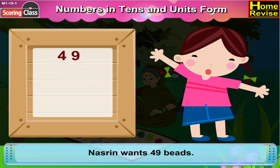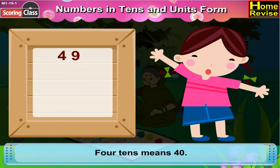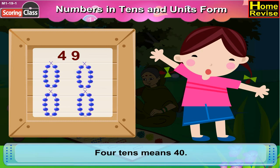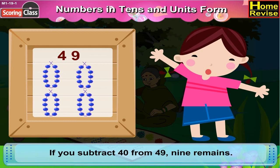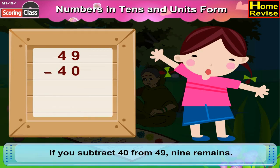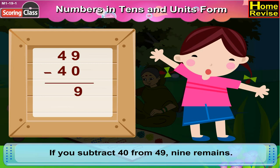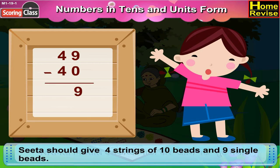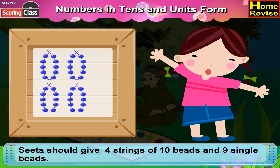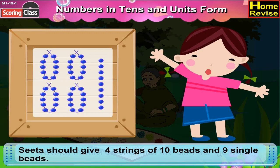Nasreen wants 49 beads. You know that 4 tenths means 40. If we subtract 40 from 49, 9 beads remain. So, Sita should give 4 strings of 10 beads and 9 single beads.